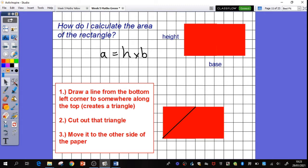Hopefully you can see it creates a triangle. Cut out that triangle like this and move it to the other side of the paper. Move it from here all the way just like that to the other side. I didn't rotate it, I didn't turn it, I didn't move it up or down. I solely cut it out and moved it all the way, slid it to the other side of the paper. And you should have something that looks like that.